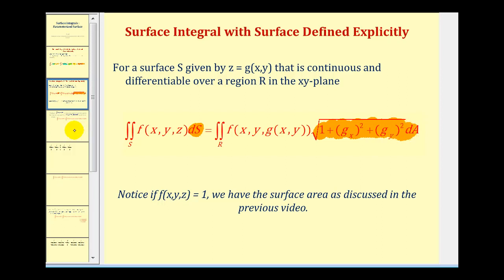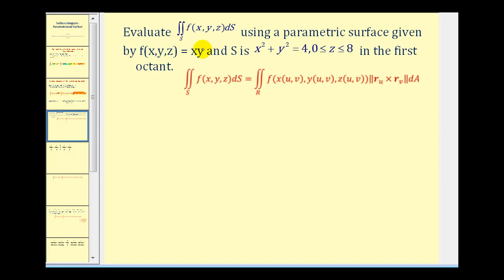So let's take a look at our first example. We want to evaluate this surface integral using a parametric surface where our function is x times y and our surface is x squared plus y squared equals four and z is on the closed interval from zero to eight only in the first octant.